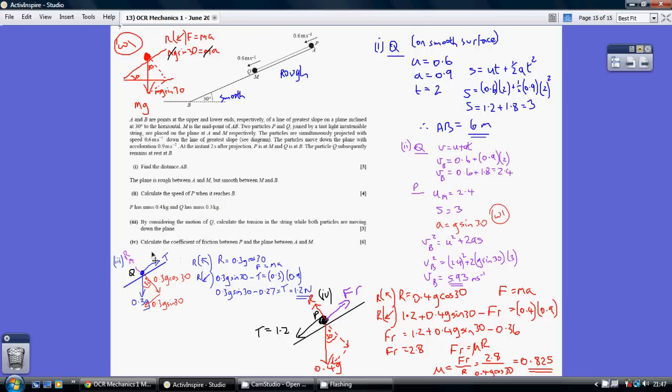Moving on to part 4. We've got to calculate the coefficient of friction between p and the plane between a and m. So this is at the same time as q is going down here, p is going down the rough part. We've just worked out that the tension between q and p was 1.2. That was going upwards for q but is obviously going downwards for p as he's being pulled down the slope effectively. Make sure you understand where that 1.2 has come from. It's the equal and opposite to this.